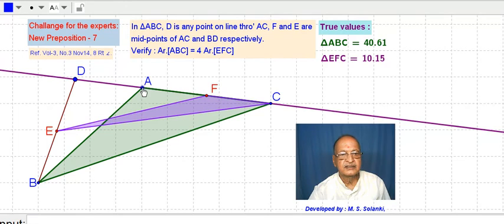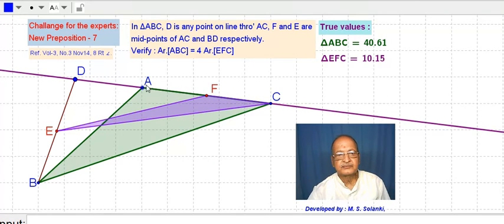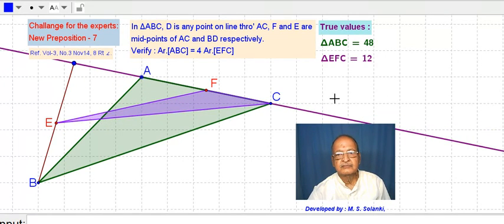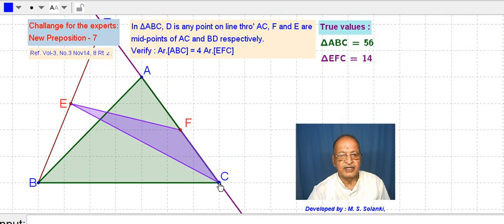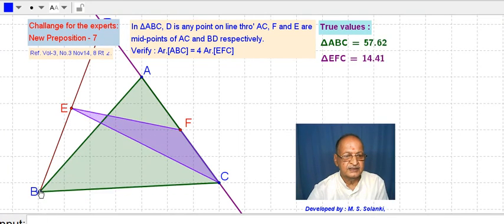Now in this case also, triangle ABC is 48 and area EFC is 12. That is, 4 times this is equal to this. So we have verified the different conditions.